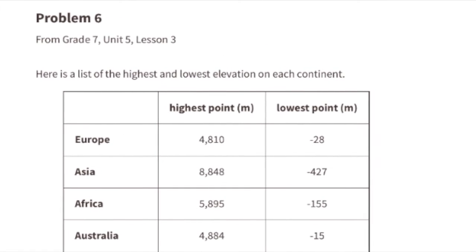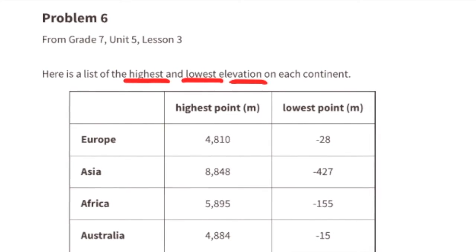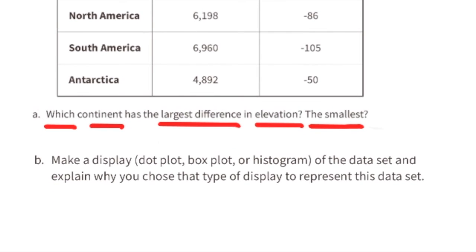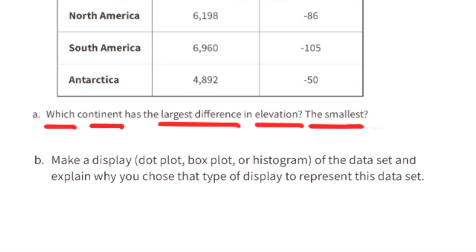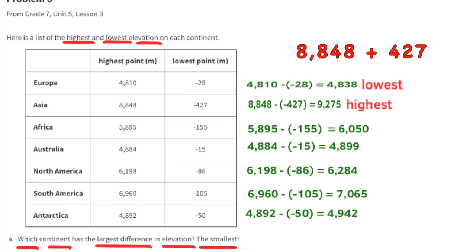Problem number 6, from 7th grade Unit 5 Lesson 3. Here is a list of the highest and lowest elevations on each continent. Part a: which continent has the largest difference in elevation, and which has the smallest? Asia has the largest difference at 9,275 meters, because 8,848 minus negative 427 equals 8,848 plus 427, which equals 9,275.